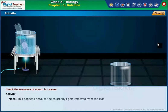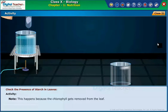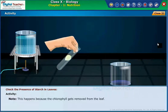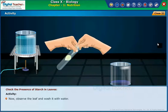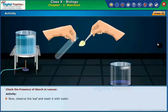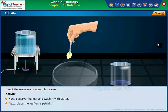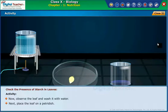Note, this happens because the chlorophyll gets removed from the leaf. Now observe the leaf and wash it with water. Next, place the leaf on a Petri dish.